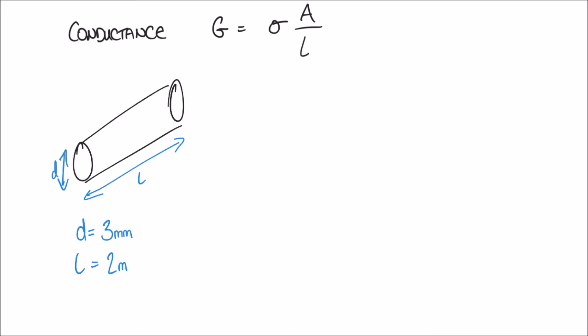We also know the conductivity of this piece of wire: sigma is equal to 50 times 10 to the 6 Siemens per metre. Given this information, we're going to work out the conductance of this particular wire.